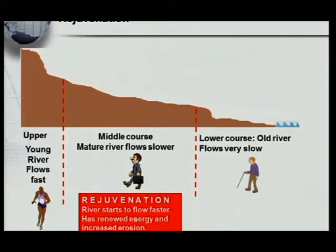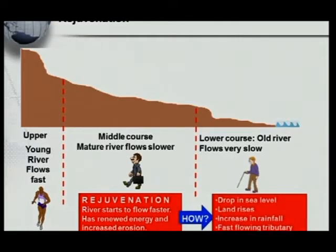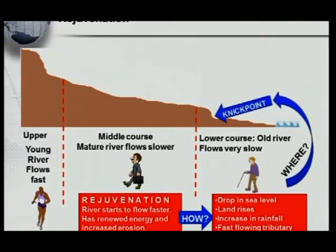But what happens now? The river can be rejuvenated — when it flows faster and starts eroding again. You must be able to mention the following causes: dropping sea level, the land rises, increase in rainfall, a fast-flowing tributary, and stream piracy. All of these will increase the river speed and you will get rejuvenation.